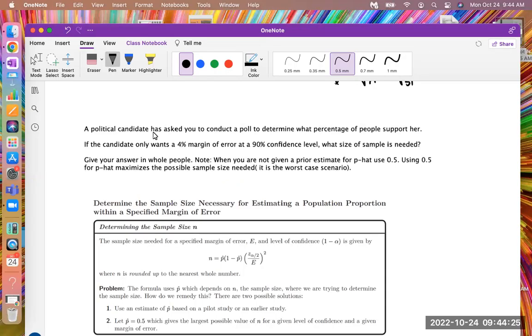A political candidate has asked you to conduct a poll to determine what percentage of people support her. If the candidate only wants a 4% margin of error at a 90% confidence level, what size of sample is needed?